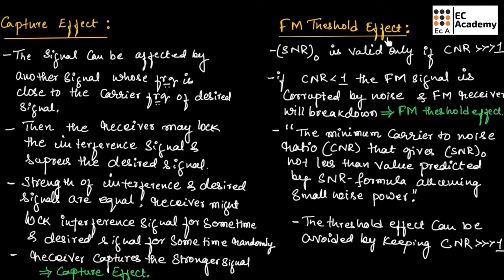Now let us understand FM threshold effect. In an FM system, the signal-to-noise ratio of the output is valid only if the carrier-to-noise ratio is very much greater than 1. If the carrier-to-noise ratio is less than 1, then the FM signal is corrupted by noise and the FM receiver will break down.